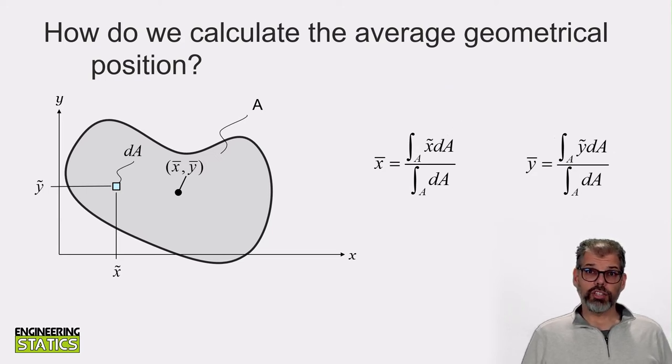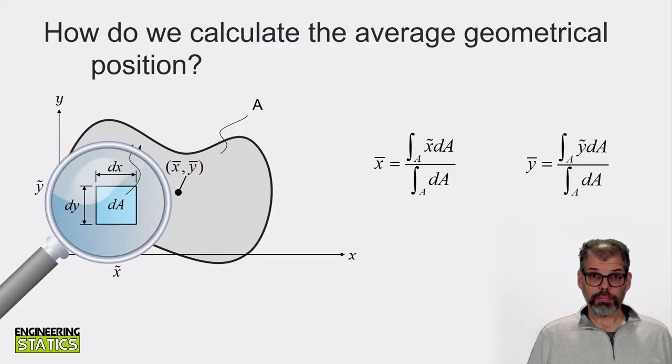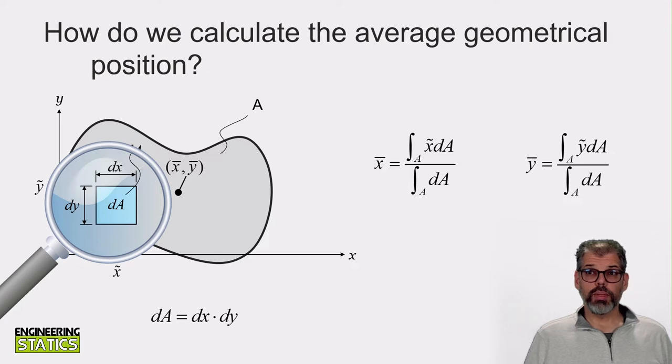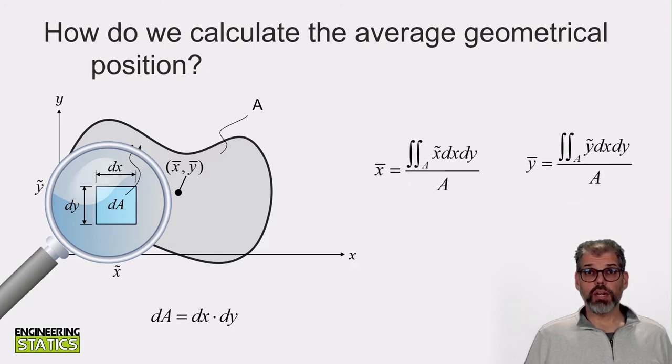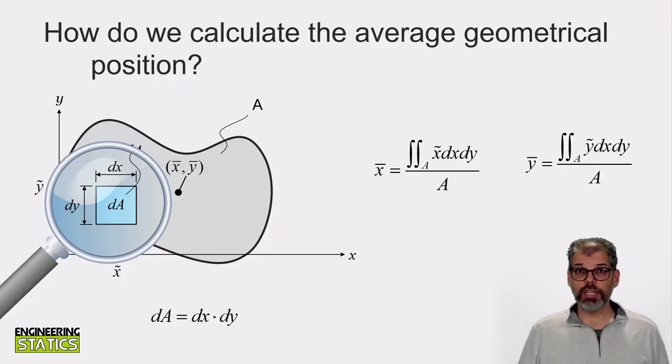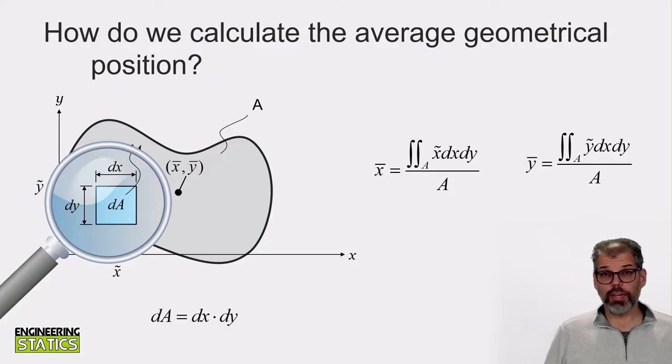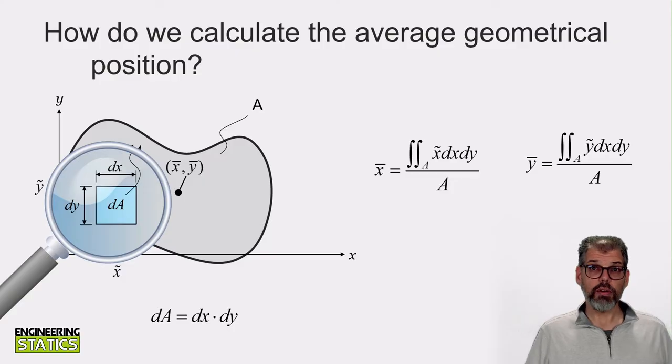What does an integral over domain A actually mean? Well, it actually means that the integral shown is not a single integral. If we zoom in on our area, we can see that area element dA has an infinitesimal width of dx and an infinitesimal height of dy. So dA is equal to dx times dy. If we insert this result into our double integral equation, then we see that we have to integrate over both the domains of x and y. So these equations are actually double integral equations. I've replaced the denominator of these two equations by A because the integral of the area element dA over the entire domain is in fact just the area of that domain.